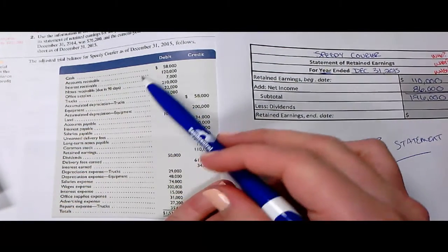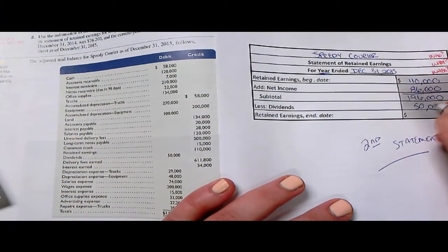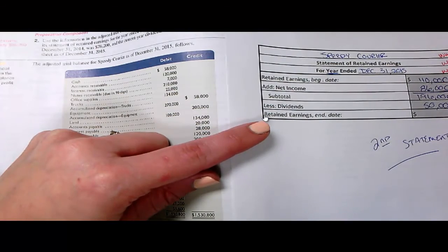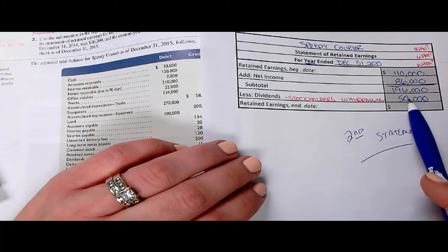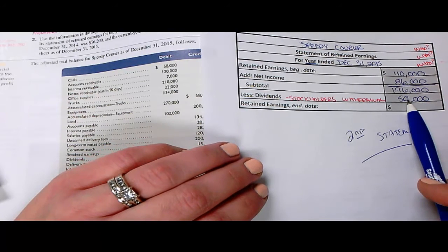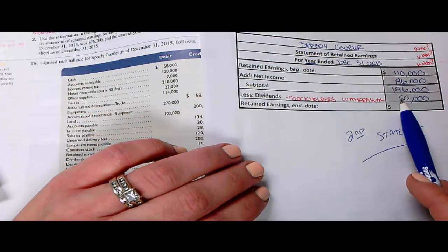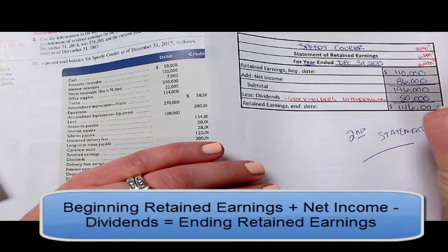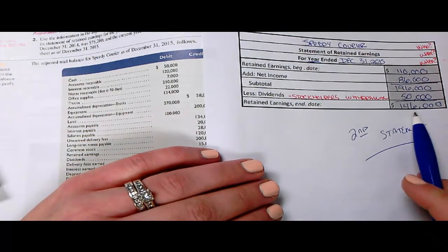Less any dividends. Where do I find the dividends? There they are: $50,000. Dividends are the stockholders' withdrawal from the company. The business was profitable this year — they made $86,000 — and the stockholders received a payout of $50,000 of that income. That's their withdrawal of the earnings. So the new retained earnings is our subtotal less the dividends taken out. Our new retained earnings — the earnings that are retained — is $146,000.